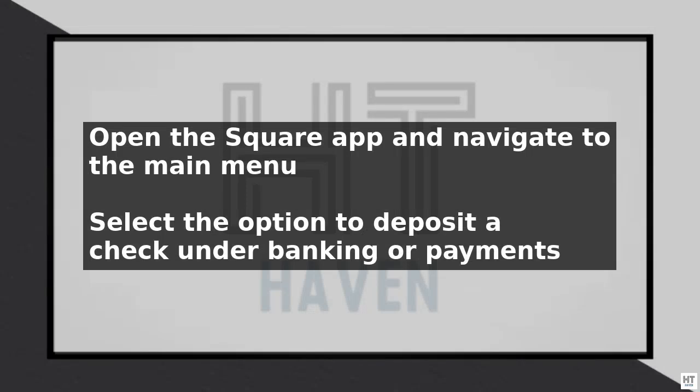To deposit a check on the Square app, start by opening the app and navigating to the main menu. Select the option to deposit a check, which is usually found under the Banking or Payments section.